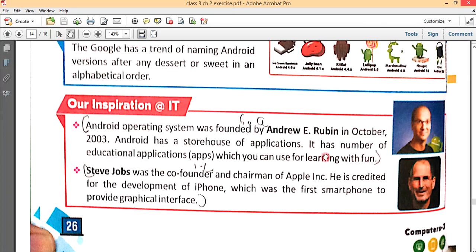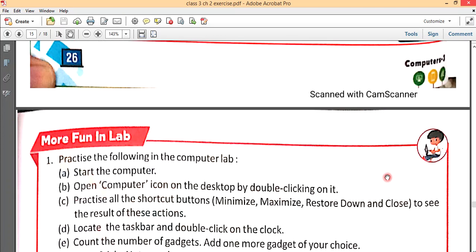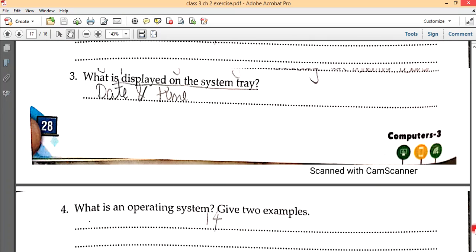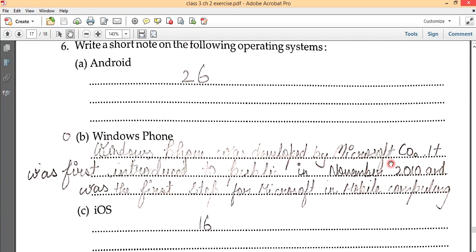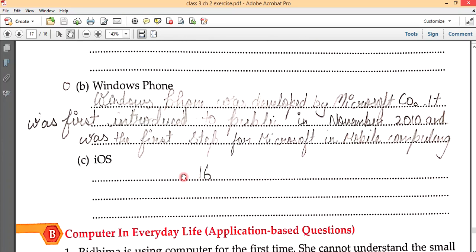Second, Windows Phone. Windows Phone was developed by Microsoft Corporation. It was first introduced to public in November 2010 and was the first step for Microsoft in mobile computing.